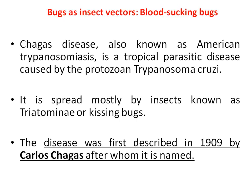This slide shows the life cycle. Chagas disease is also known as American Trypanosomiasis — a tropical parasitic disease caused by the protozoan parasite Trypanosoma cruzi. It is spread mostly by insects known as Triatominae kissing bugs. The disease was first discovered in 1909 by Carlos Chagas, after whom it is named.